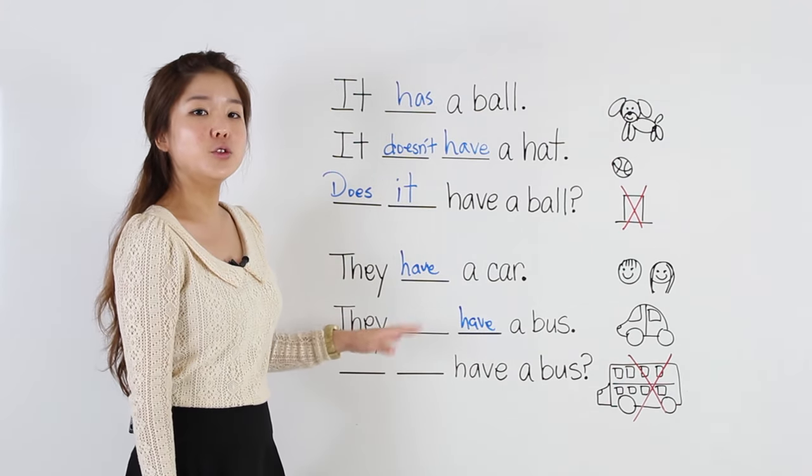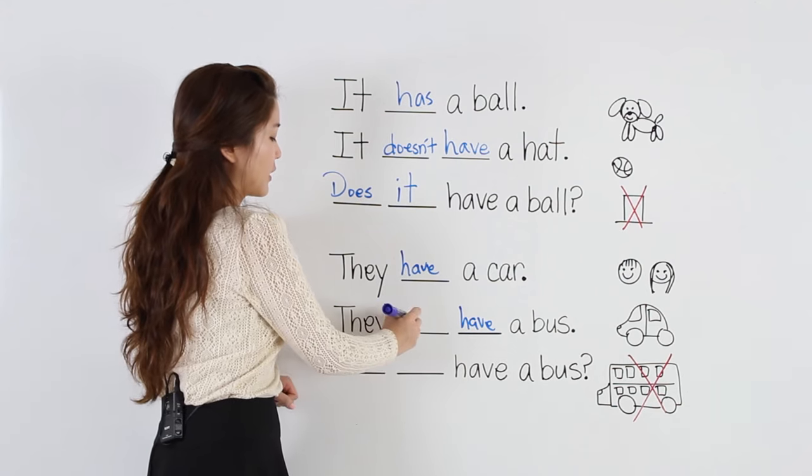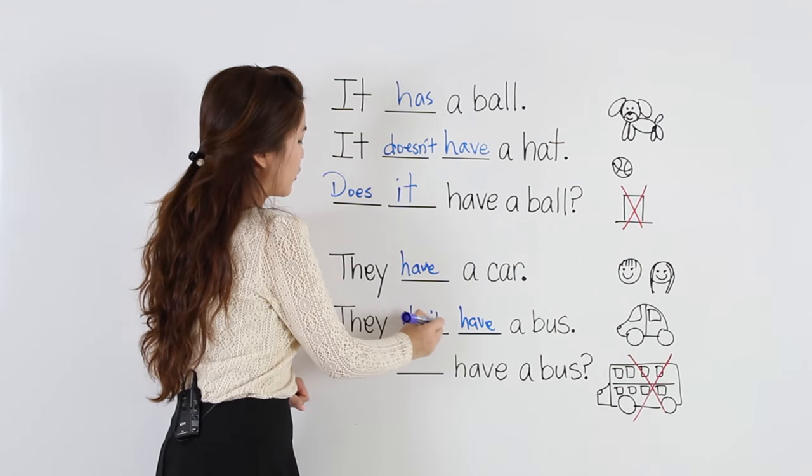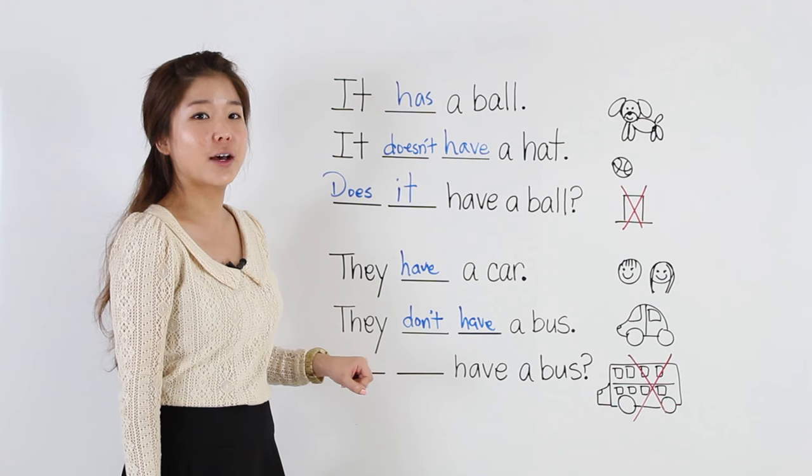Doesn't have or don't have? Which one is it? For they, we say they don't have a bus.